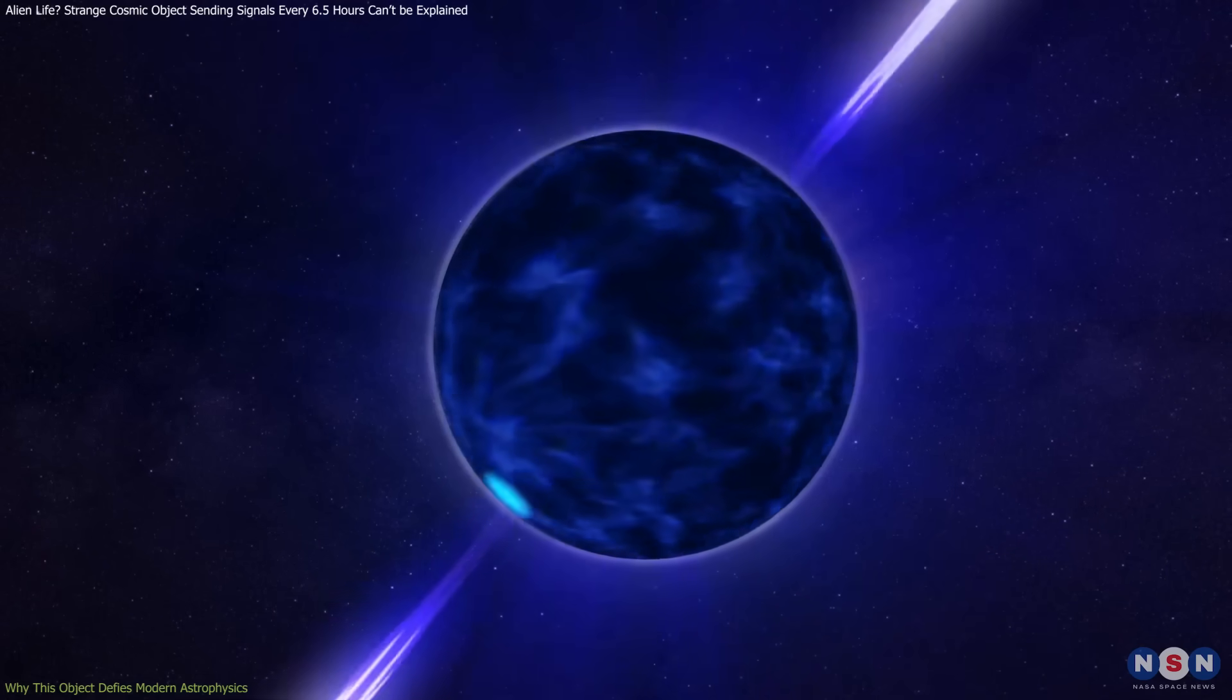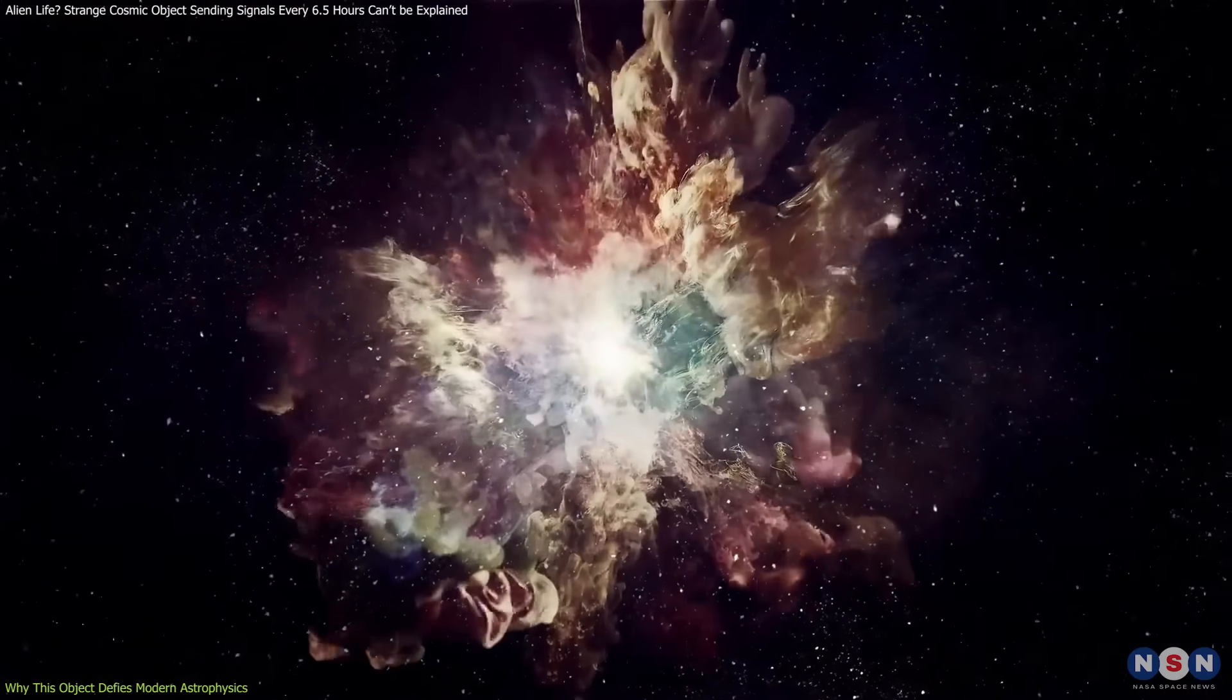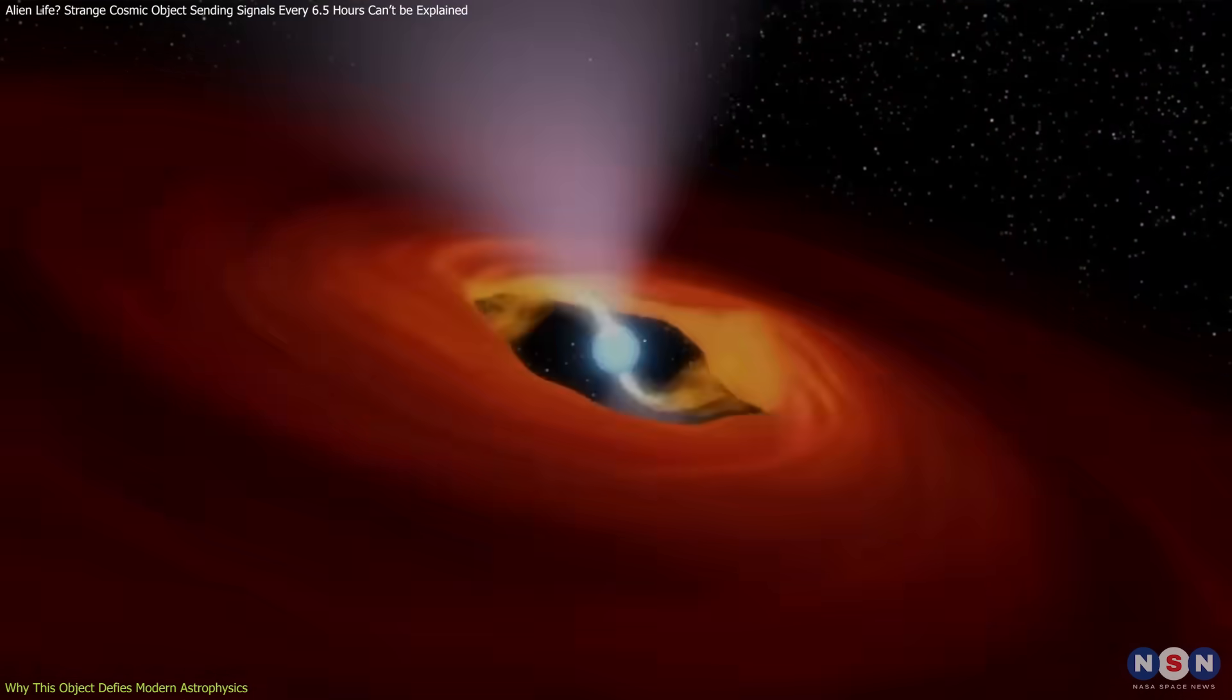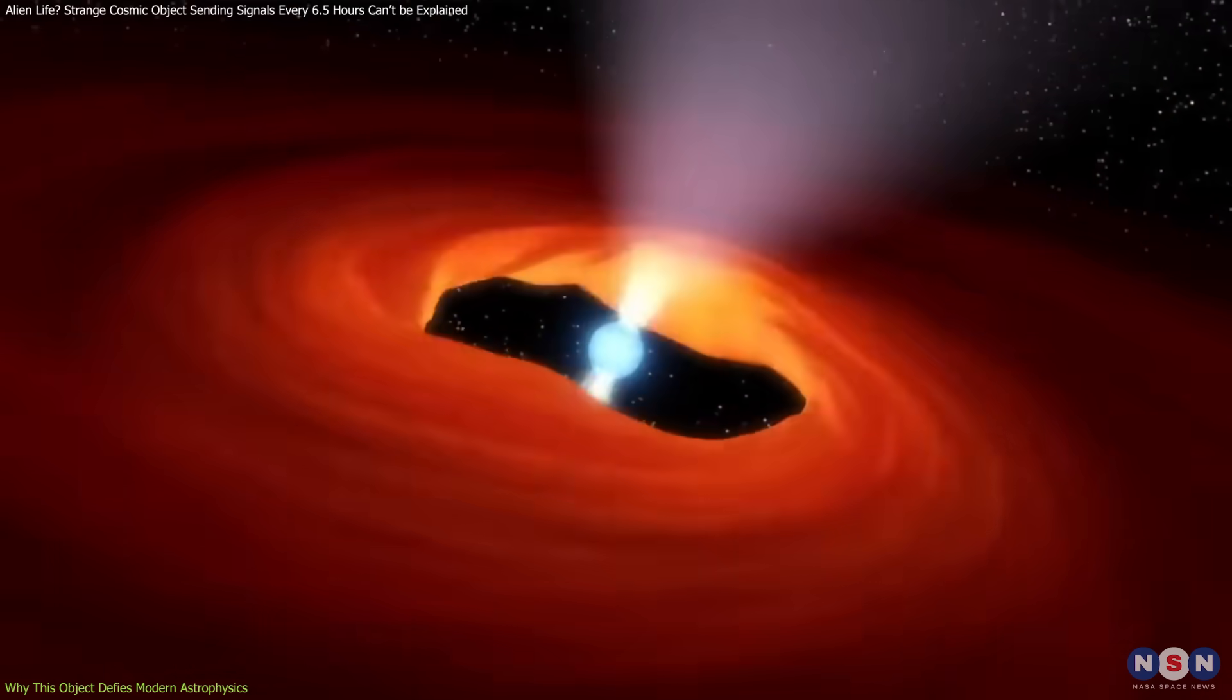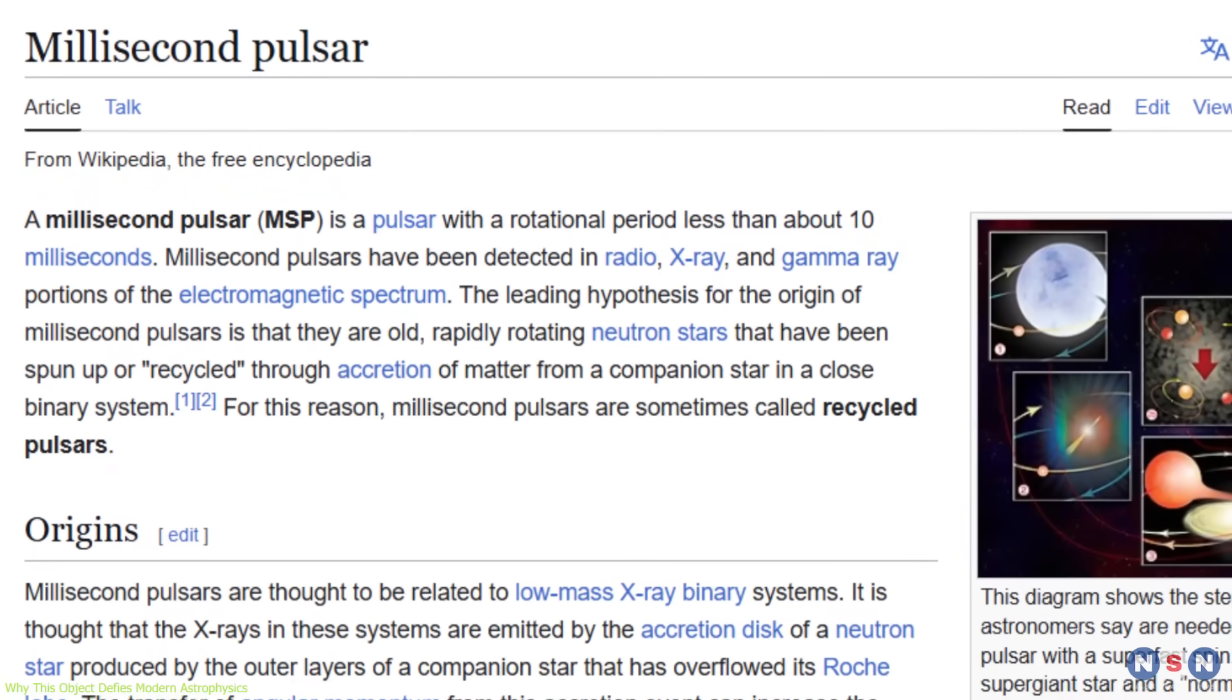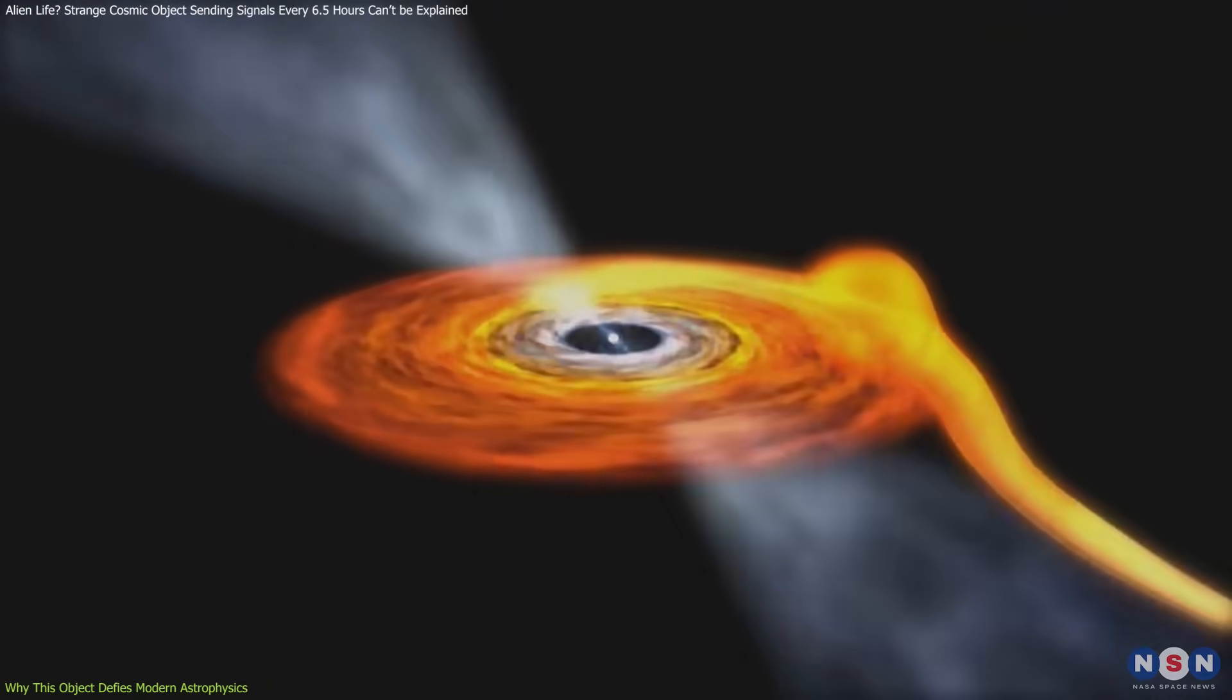Neutron stars, the ultra-dense remnants of massive stars that have undergone supernova explosions, typically rotate at extreme speeds. The majority of known pulsars rotate several times per second, with some extreme cases, known as millisecond pulsars, spinning at over 700 times per second.